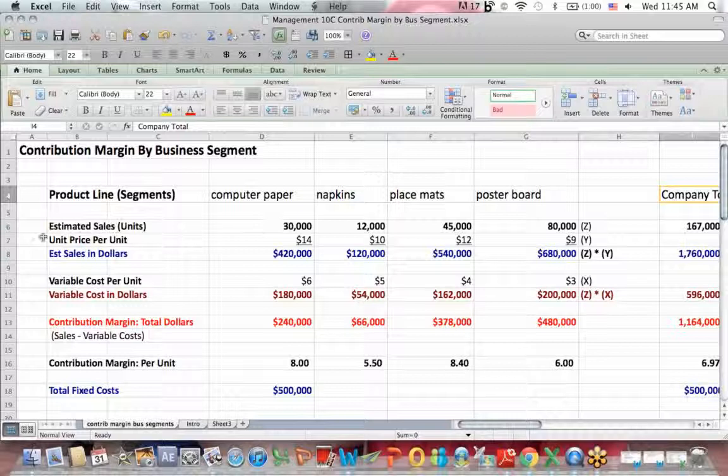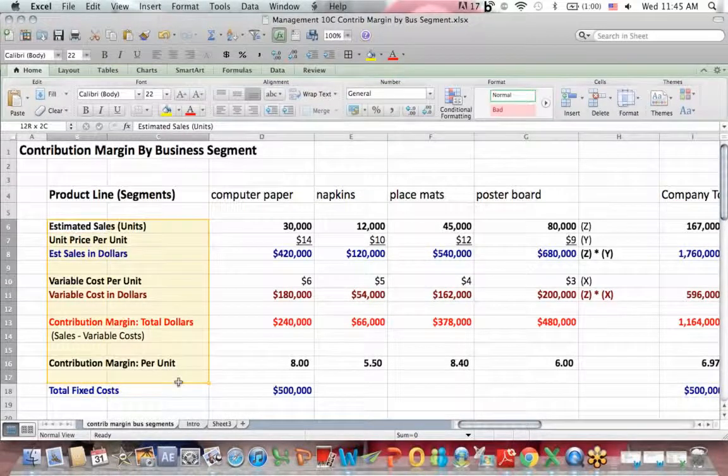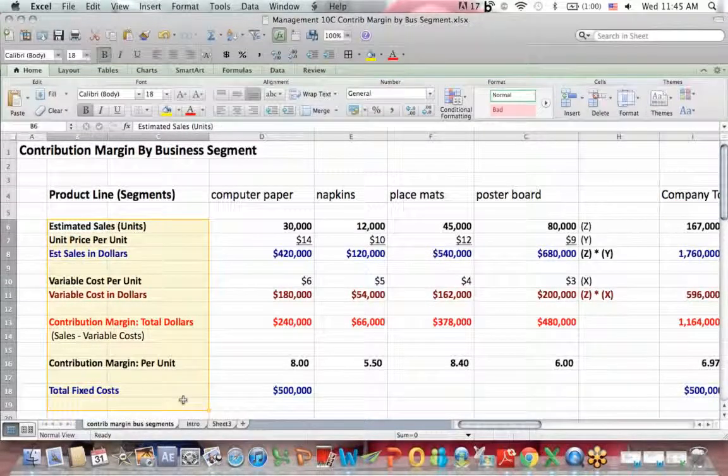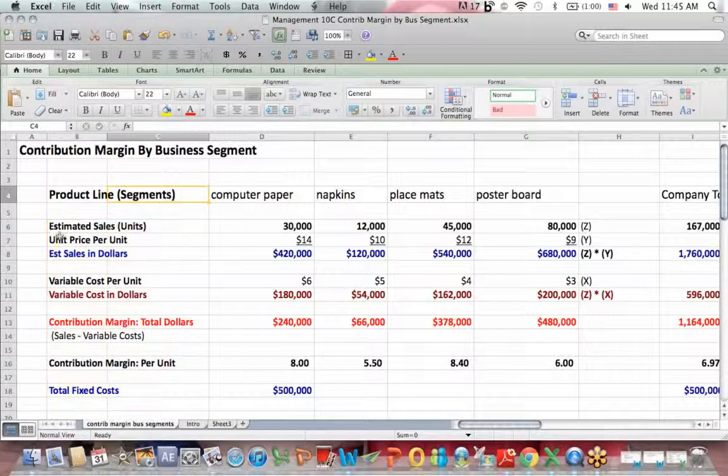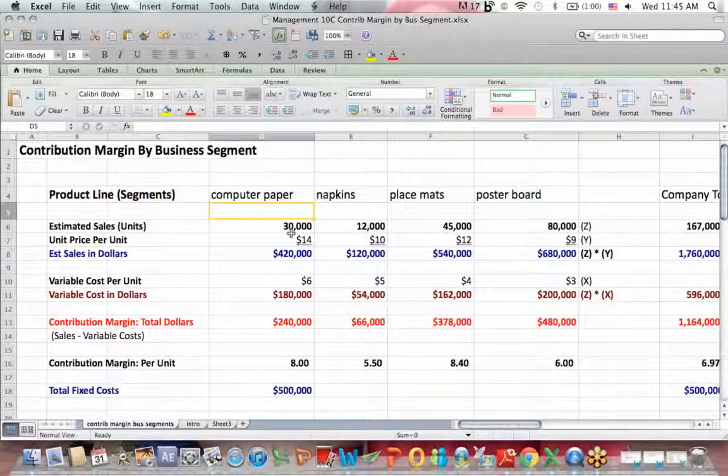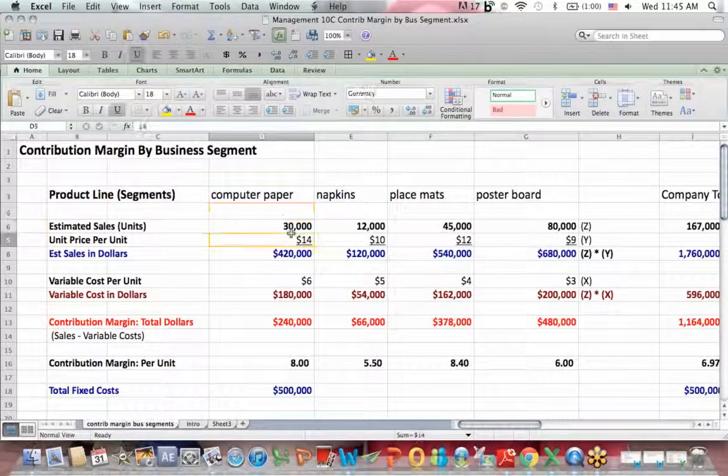And then I have a company total off to the right. And what I have down here, and I try to color code it to make it a little easier to see, is we have sales in units, and it's important to label it whether it's a unit or whether it's in dollars.